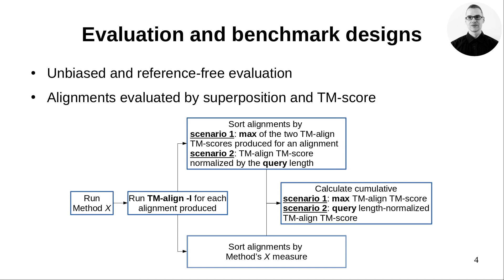Protein structures themselves are sufficient to calculate their mutual similarity. It suffices to calculate the proportion of atoms of one structure that are in good spatial agreement with those of the other. Applied to protein structure alignment methods, this approach provides an unbiased and reference-free evaluation.